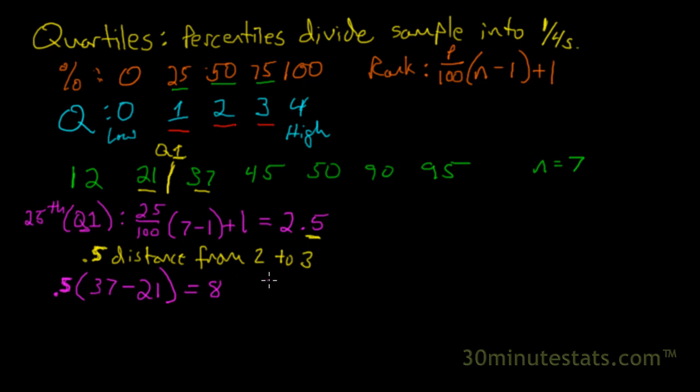This means that Q1, or quartile 1, is going to be equal to the second observation. Remember, we're half the distance between the second and third. So it's the second observation, 21, plus 8, which is going to be 29. So Q1 is going to be equal to 29, and the value of the first quartile will be 29. This gets us our first quartile.